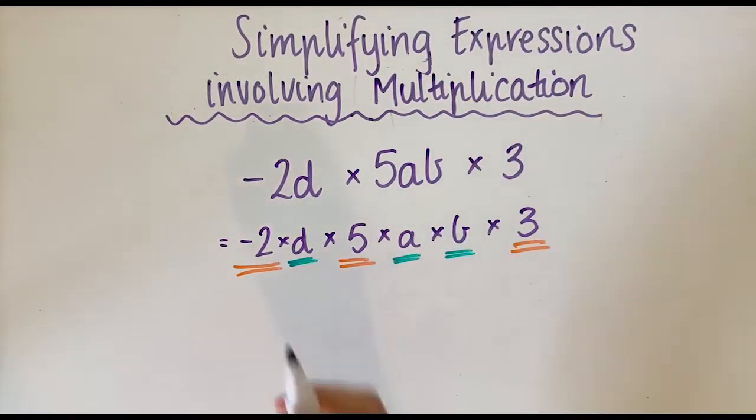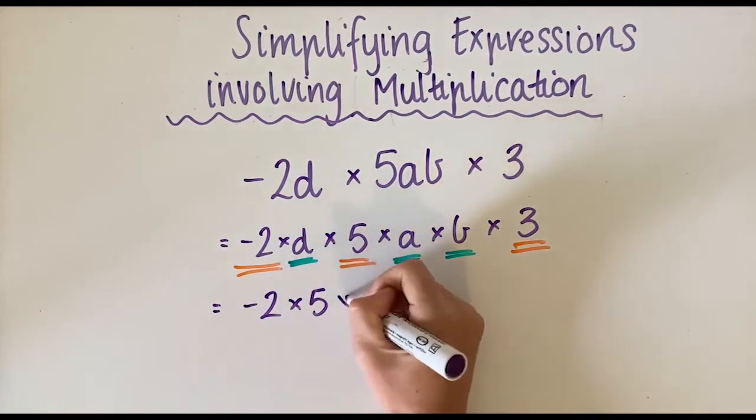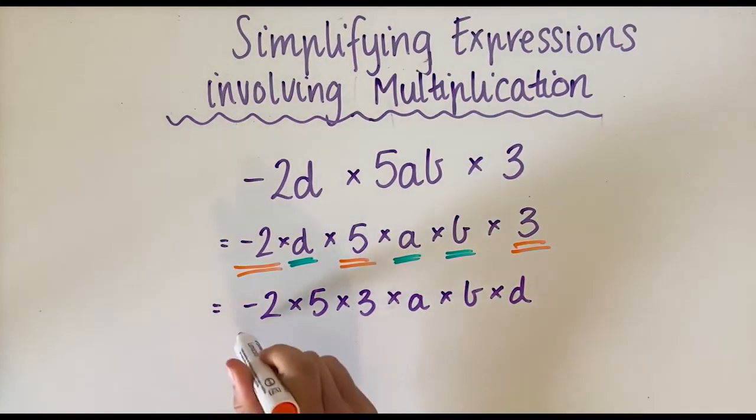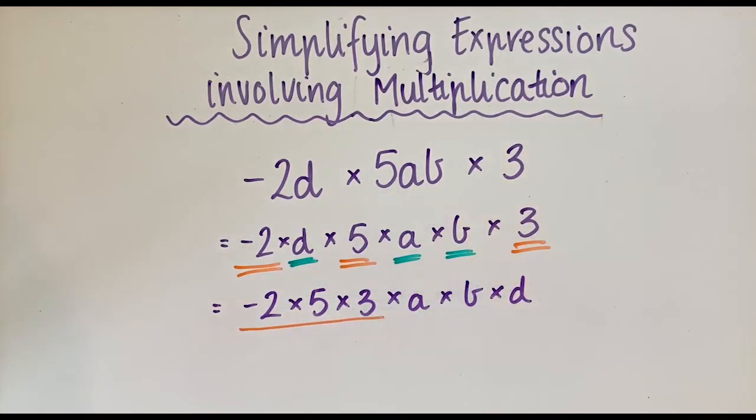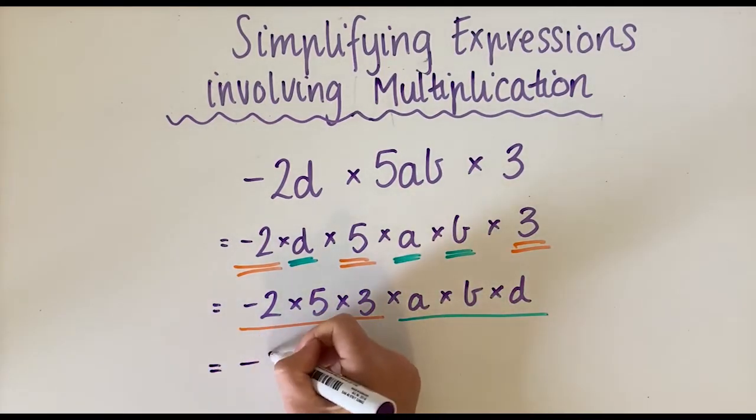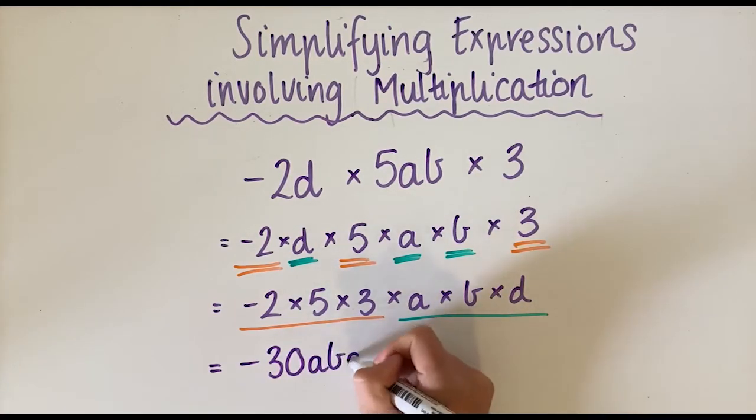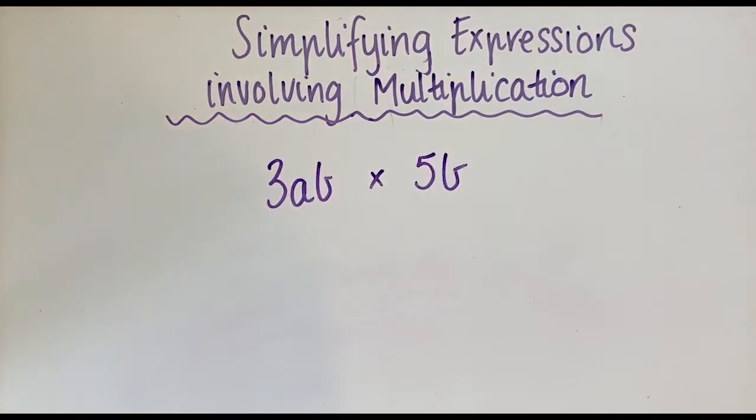I'm going to rewrite it—you don't have to. You'll see that I've written these in alphabetical order because that is the most correct way to write it. The numbers all go together, and the variables or pronumerals all go together. So -2 × 5 is -10, times 3 is -30, then a, b, d.